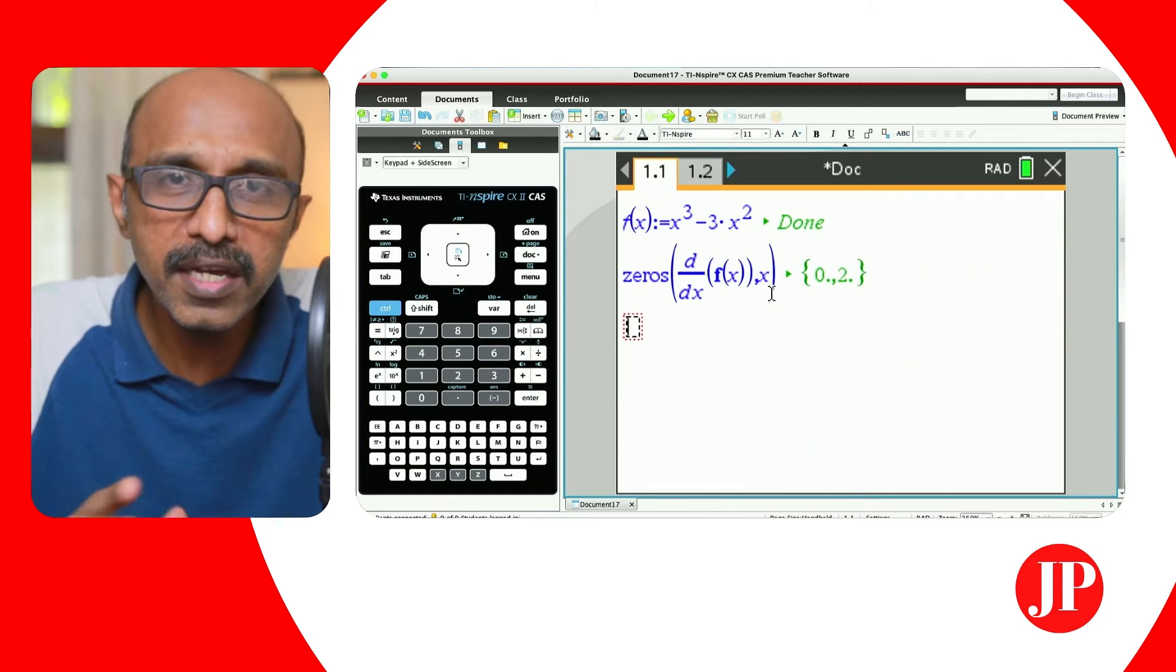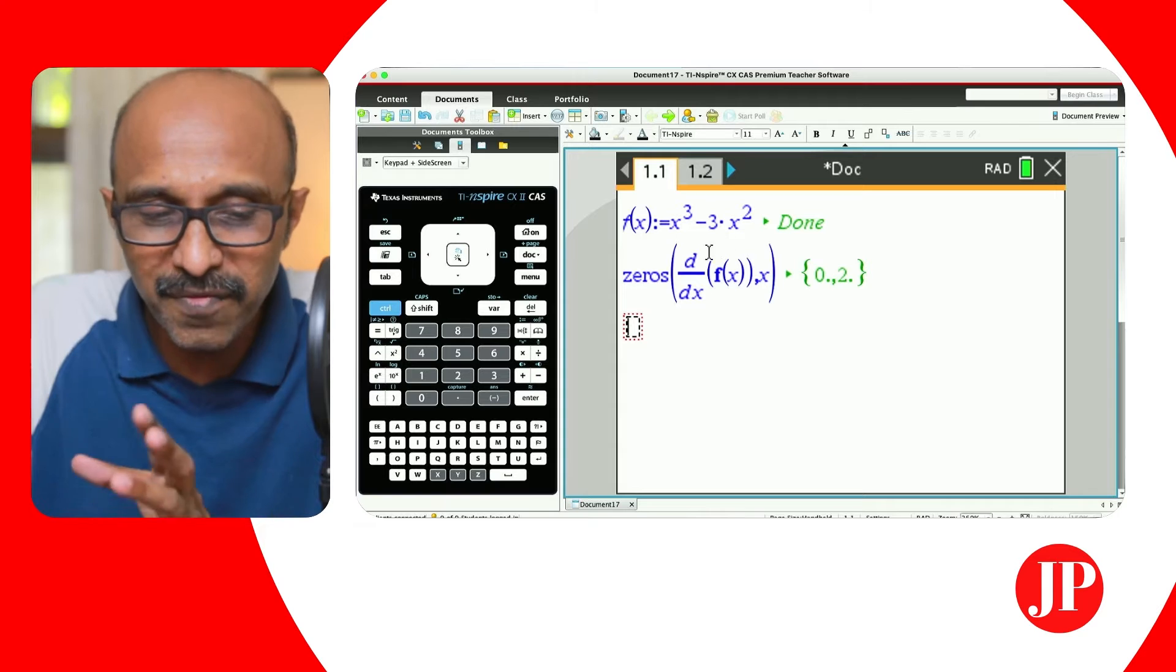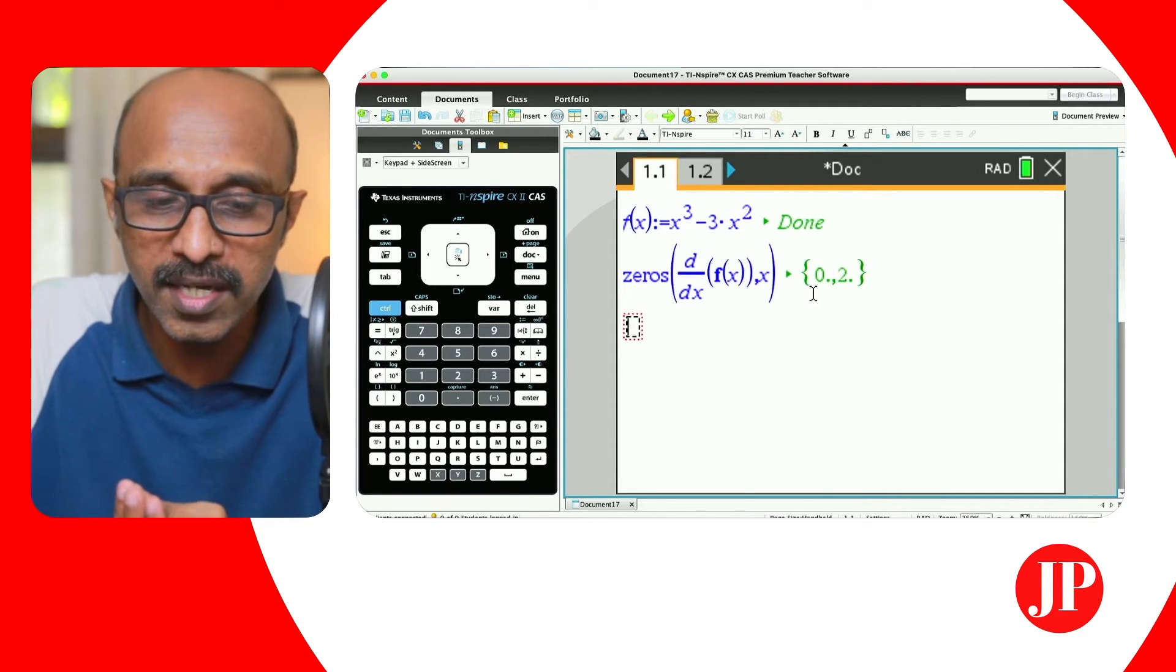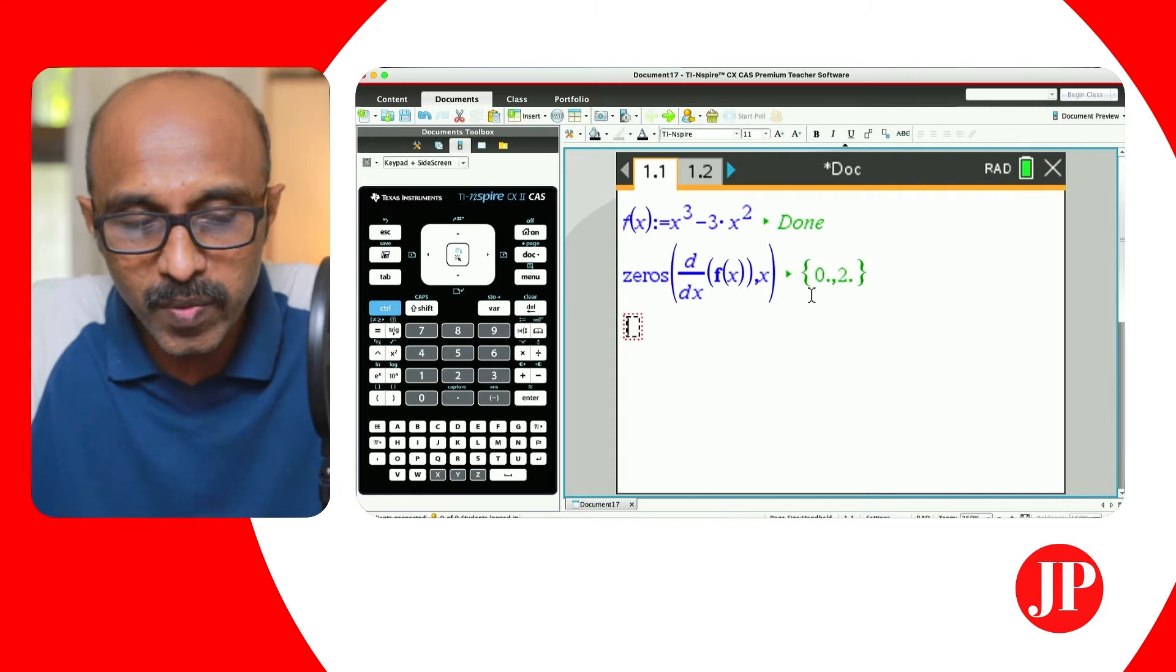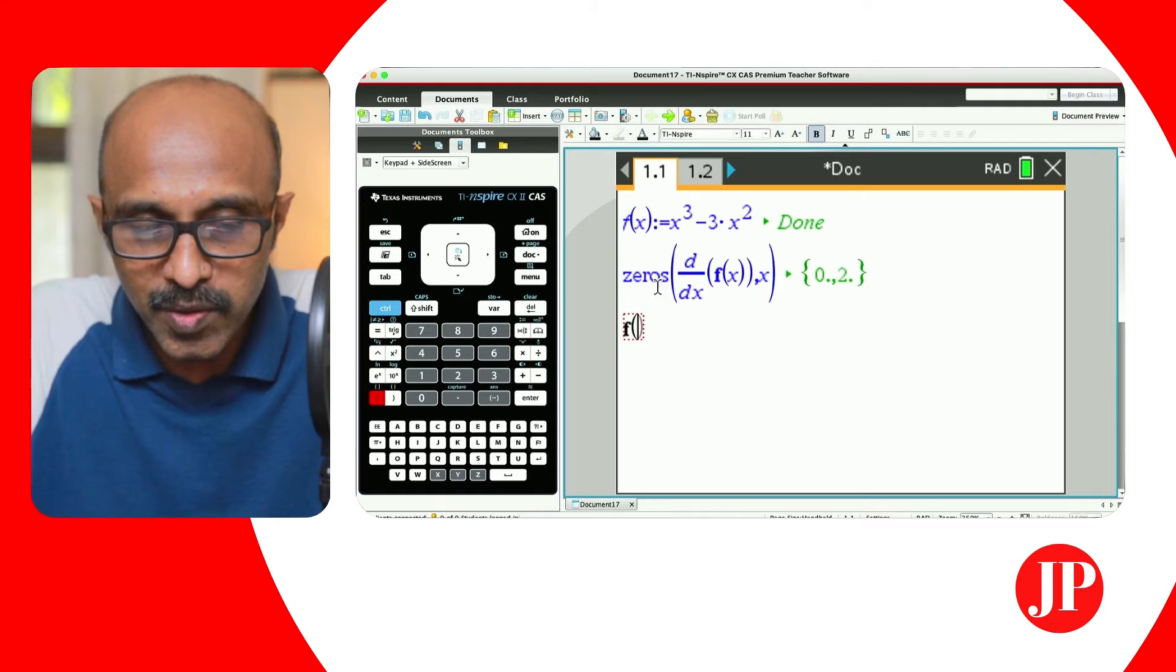We're going to make a widget out of it so that when you run the widget, any function that you defined it should give you the coordinates. This is just the x coordinates. So to find the y coordinates we're going to say f of these values.